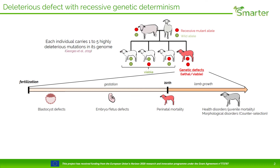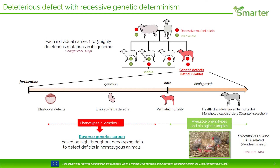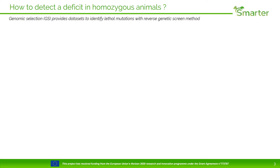Homozygous animals are counter-selected in selection schemes. When phenotypes and biological samples are available, it's easy to find the genetic determinism. For example, recently we identified a mutation in integrin beta 4 gene associated with epidermolysis bullosa in the French Fondéan sheep. However, when we want to identify lethal mutations affecting embryonic development, we are not able to access phenotypes and biological samples. The aim of the study is to use a reverse genetic screen method based on high-throughput genotyping data to detect deficits in homozygous animals. Thanks to genomic selection, large datasets are available to identify lethal mutations with this reverse genetic screen method in dairy sheep.